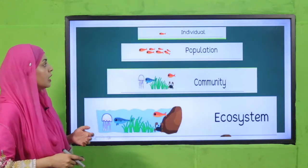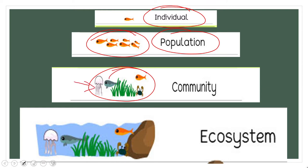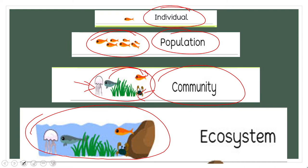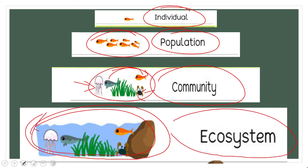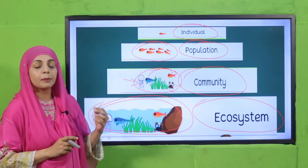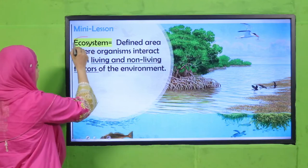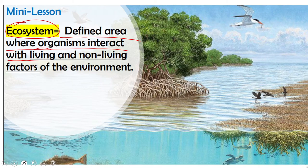I hope everybody has done it. Now, starting from an individual: same-type organisms come together to make a population. When different types of organisms are together — like jellyfish, different types of fish, crabs — they make up a community. When these organisms interact with their surroundings and their habitat, they make up an ecosystem. So it goes: individual → population → community → ecosystem.